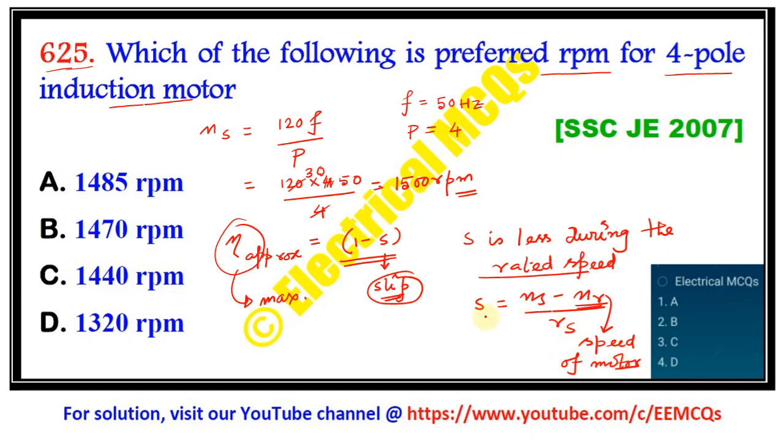So definitely from this expression we can see if Nr is high and is nearer to Ns, then s will be less. And if s is less, then the efficiency will be higher side, means the efficiency will be at the higher side. And we need higher efficiency for the motor.